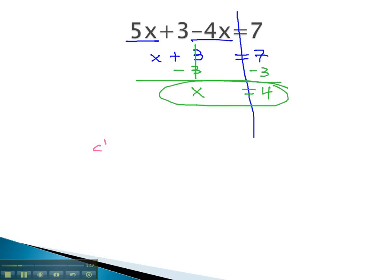As usual, we will want to check this answer to be sure it's correct by replacing the x, replacing the variable on both sides with the number that we found it to be. So, we have 5x, or 5 times 4, plus 3, minus 4x, or 4 times 4, equals 7.